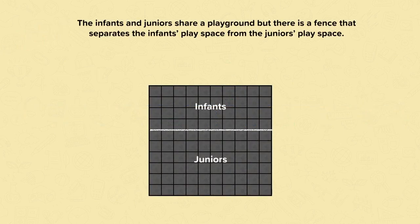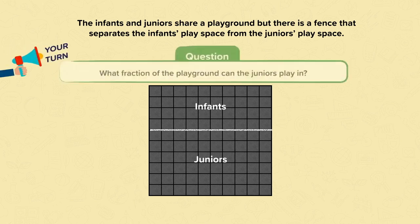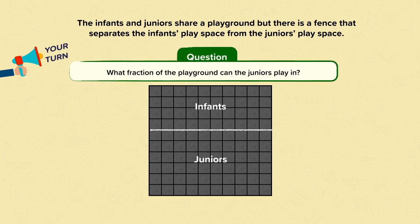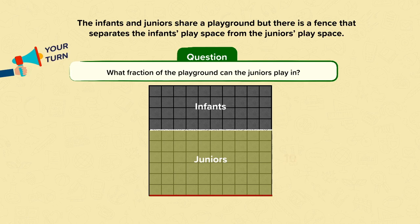Now let's have a look at a problem. The infants and juniors share a playground, but there is a fence that separates the infants' play space from the juniors' play space. Work out what fraction of the playground the juniors can play in. Pause the video and have a go. The juniors' play area has ten hundredths along the bottom and six hundredths up the side, so we can do ten times six to get sixty. That means the juniors can play in sixty hundredths of the whole playground.